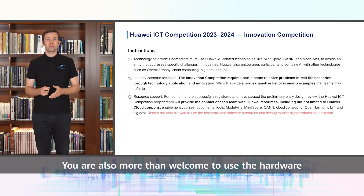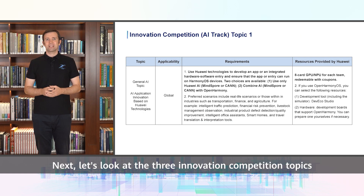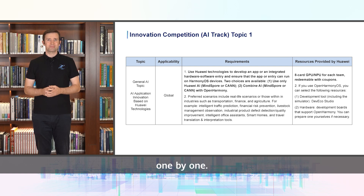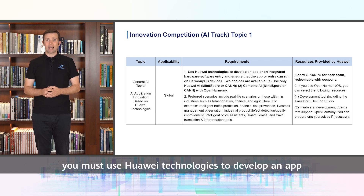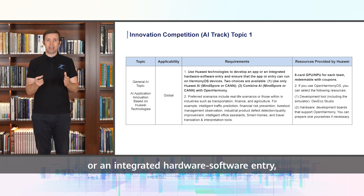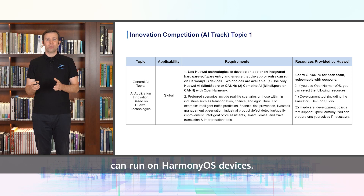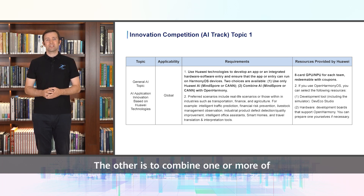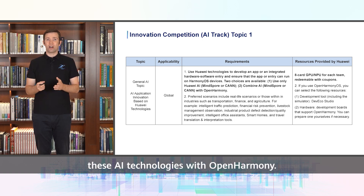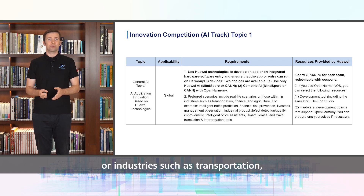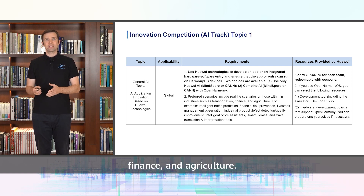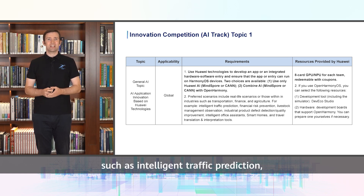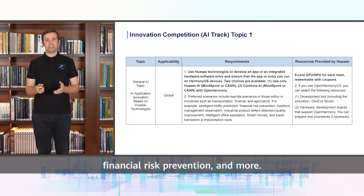Let's look at the three innovation competition topics one by one. The first topic is the general AI topic. For this topic, you must use Huawei technology to develop an app or an integrated hardware-software entry and ensure that it can run on Harmony OS devices. There are two options: one is to use only Huawei AI-related technologies such as MindSpore or CAN; the other is to combine one or more of these AI technologies with Open Harmony technologies. Preferred scenarios include real-life industries such as transportation, finance, and agriculture. Examples include intelligent traffic prediction and financial risk prevention.